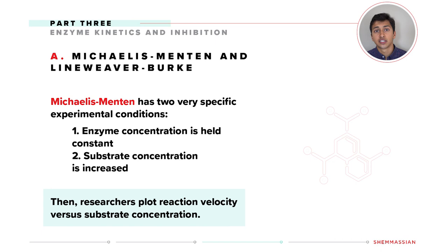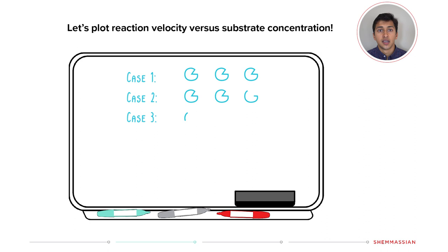Here's how they set up this experiment. Let's start by drawing out a few enzymes in three different cases. In the first case, we'll include the same number of substrates. In the second, we'll add some more substrate. And in the last one, we'll add a lot of substrate.